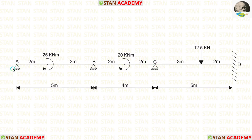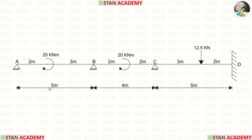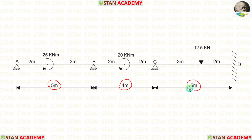At points A, B, and C, there are hinged supports. At point D, there is a fixed support. Span AB is 5 m long, span BC is 4 m long, and span CD is 5 m long.